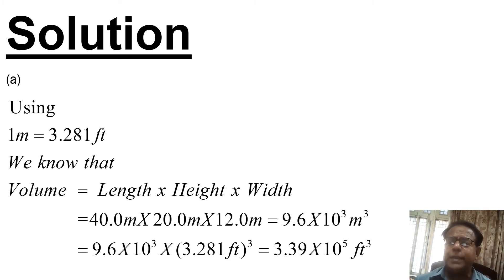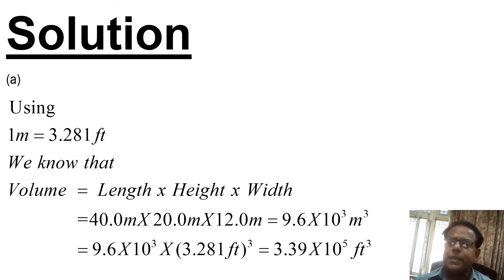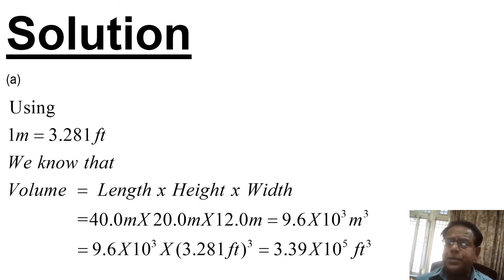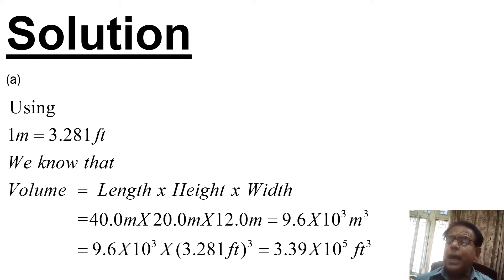We know that volume is equal to length multiplied by height multiplied by width. All three quantities are given in the problem statement, so we multiply all three: 40.0 m × 20.0 m × 12.0 m equals 9.6 × 10³ cubic meters, which can also be written as 9,600 cubic meters.